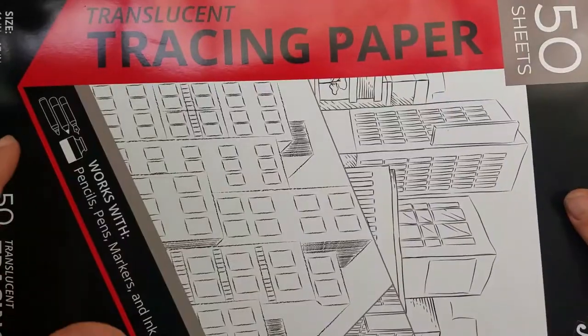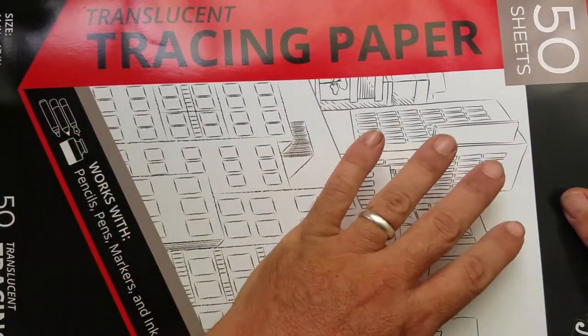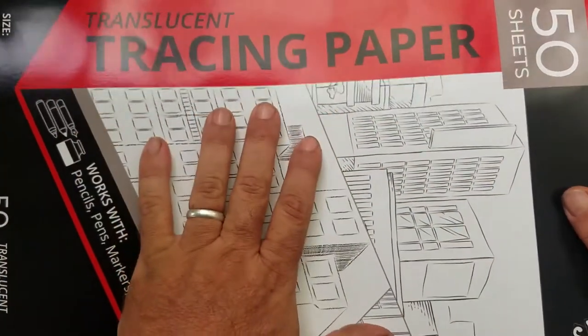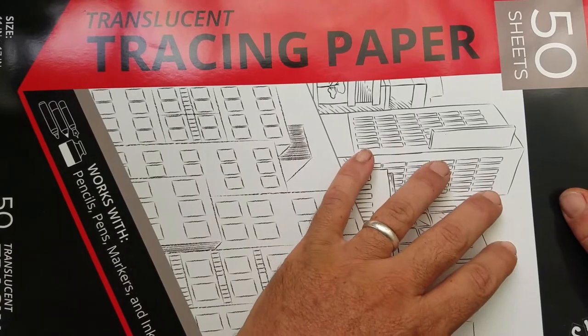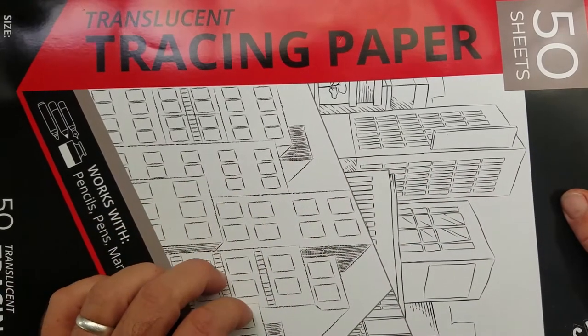So get your papers and pencils out. We're going to go back into the design studio and put zones and sectors down onto our site plan. Now for this stage we are going to use a different paper, tracing paper.